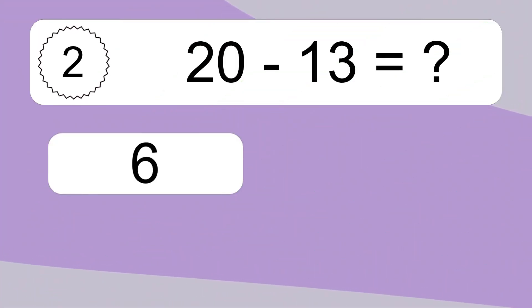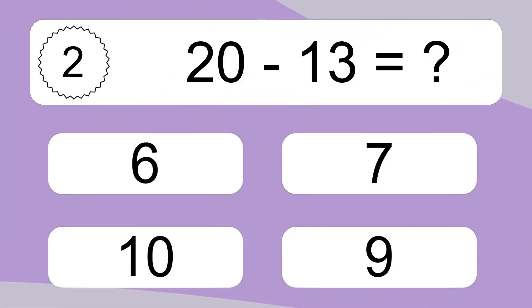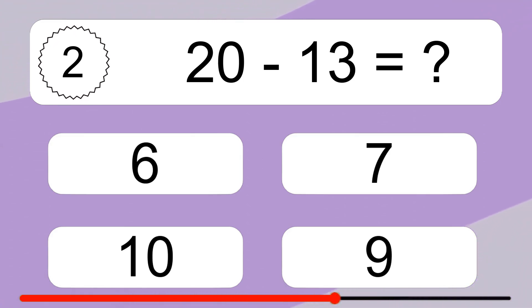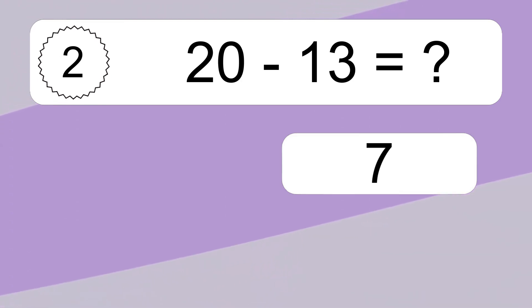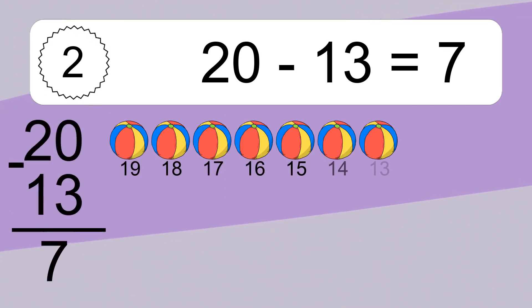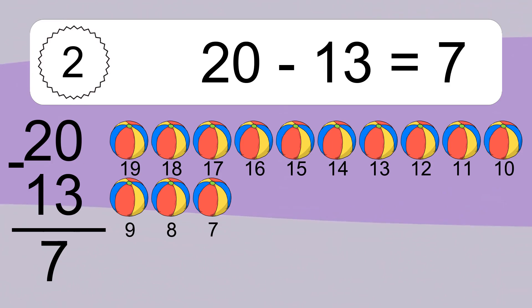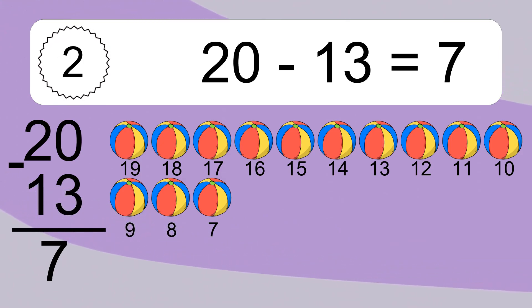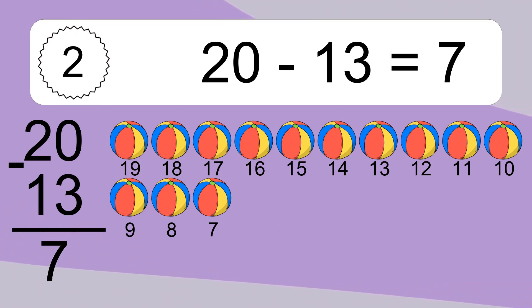20 minus 13 equals what? 20 minus 13 equals 7. Let's count it: 19, 18, 17, 16, 15, 14, 13, 12, 11, 10, 9, 8, 7.